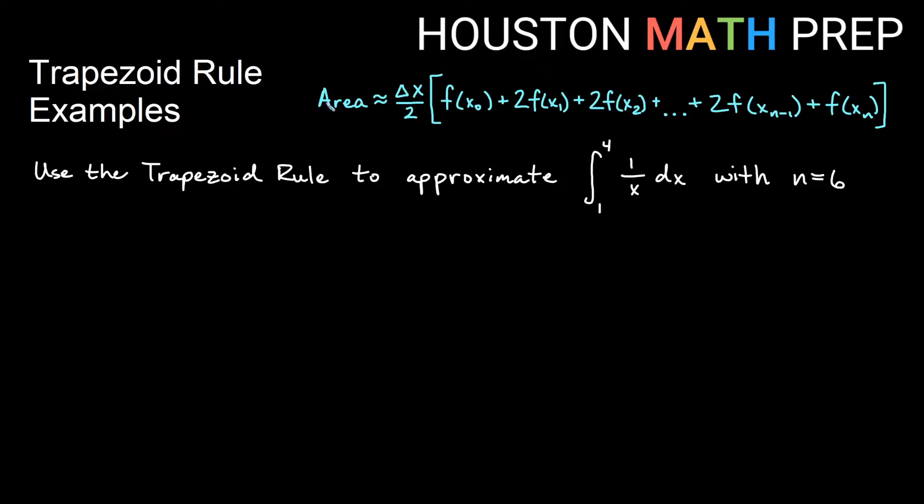So we have our area approximation formula up here. We have delta x over 2 times our sum. Remember that the first and last term in the sum are not doubled, and every other term in between with our y values are doubled.